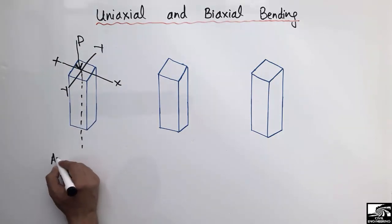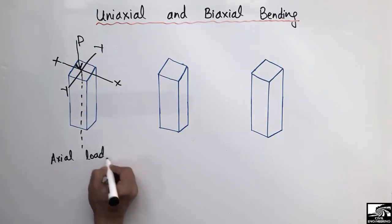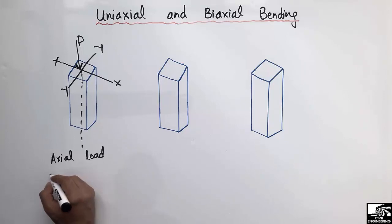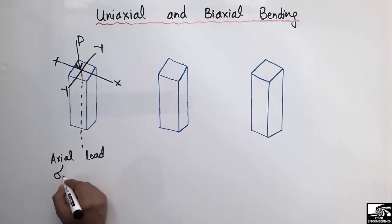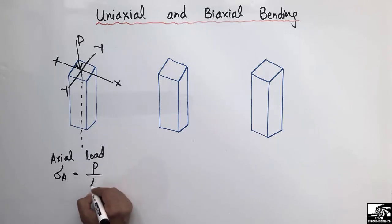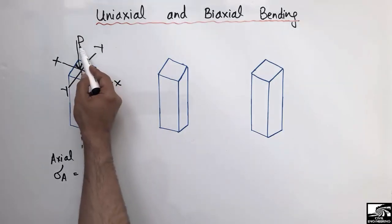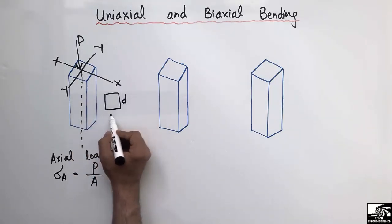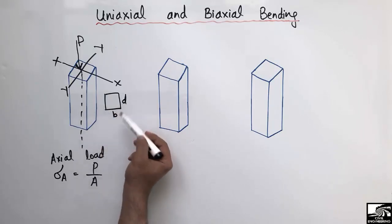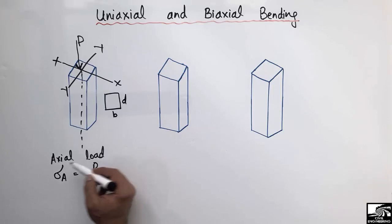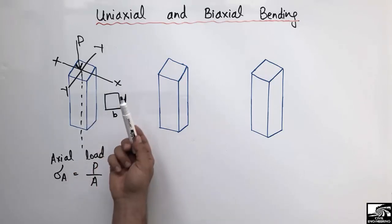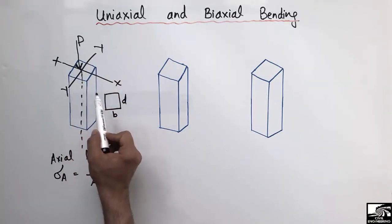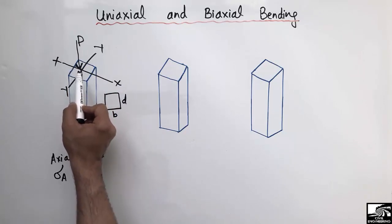Due to this axial load, we will have axial stresses in the column. We can find these axial stresses using the formula: stress = P / A, where P is the load and A is the cross-sectional area of the column. If D is the depth and B is the width of the column, dividing the load by the cross-sectional area gives us the axial stresses.